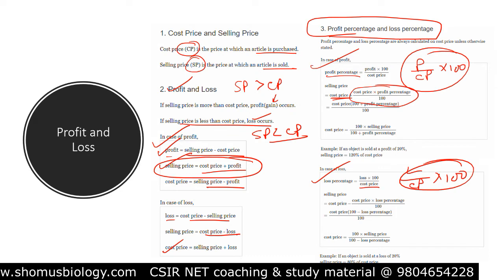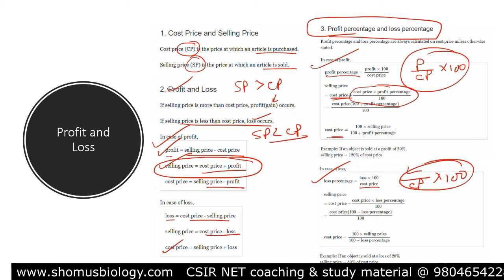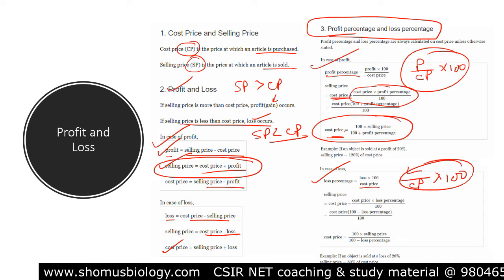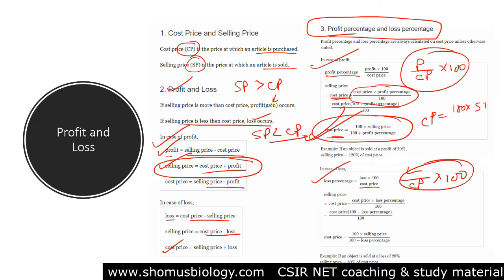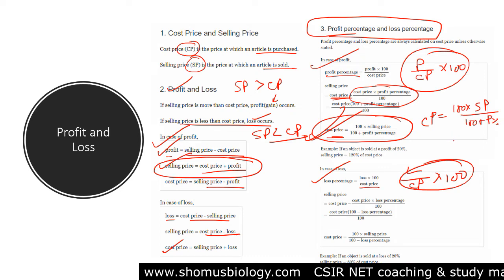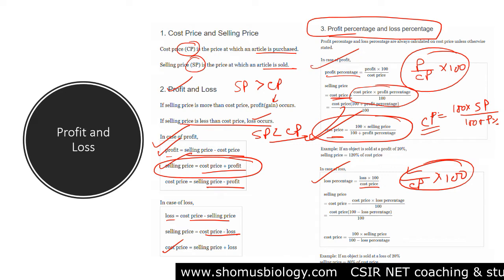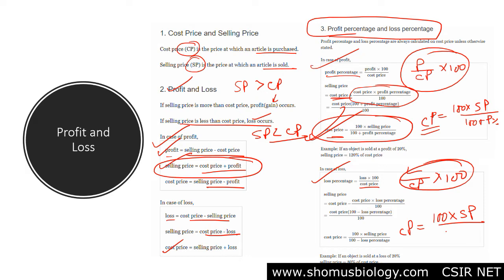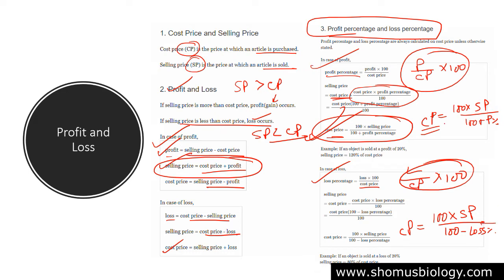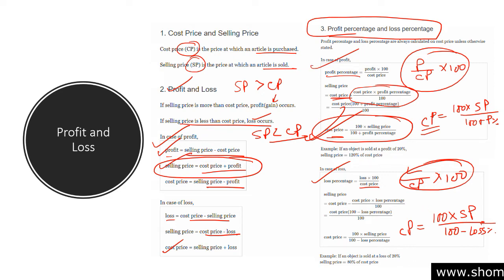The take-home formula for cost price when profit percentage is given: CP = 100 × SP divided by (100 + profit percentage). Similarly, when loss percentage is given: CP = 100 × SP divided by (100 minus loss percentage). So cost price can be calculated in both cases — for profit: 100 × SP / (100 + profit%), and for loss: 100 × SP / (100 − loss%).